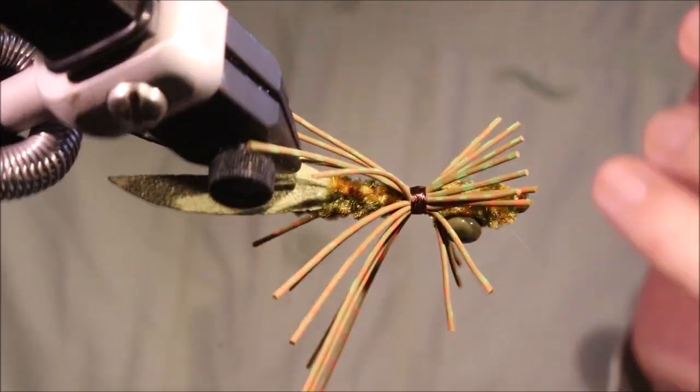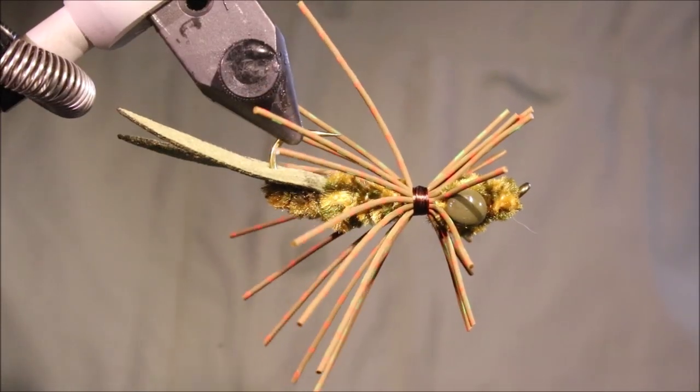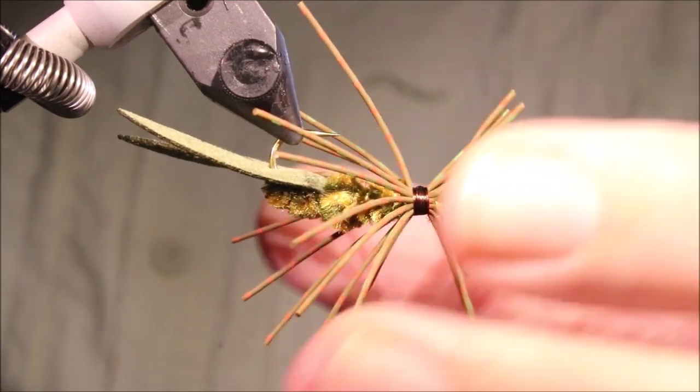There you go, this is the claw dad, first time I saw it, I thought it was a bit strange looking, but I'll tell you, when it's hanging out of a bass's mouth, it looks good, excellent fly.